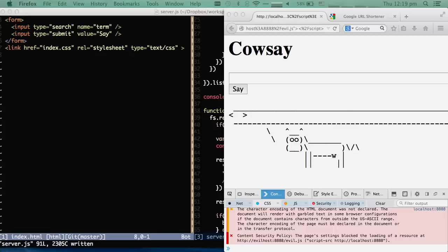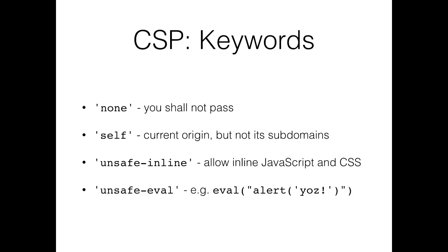Here are a list of Content Security Policy keywords. 'none' means do not load this type of resource from any origin. For example, if you don't need Flash or plugins on that page, you can set object-src to 'none,' which will block all attempts to load Flash or other plugins. 'self' means the current origin, but it does not include subdomains — to include subdomains you have to explicitly say '*.currentorigin'.